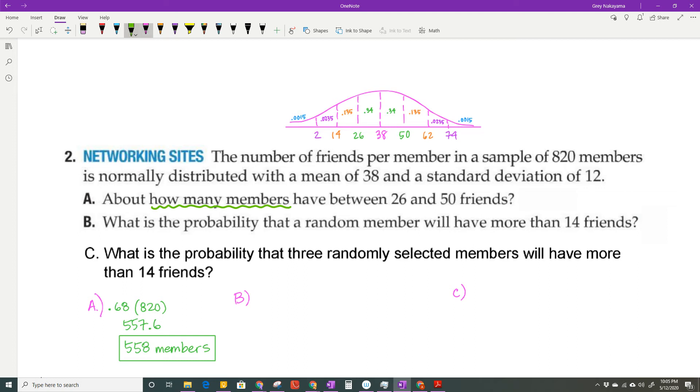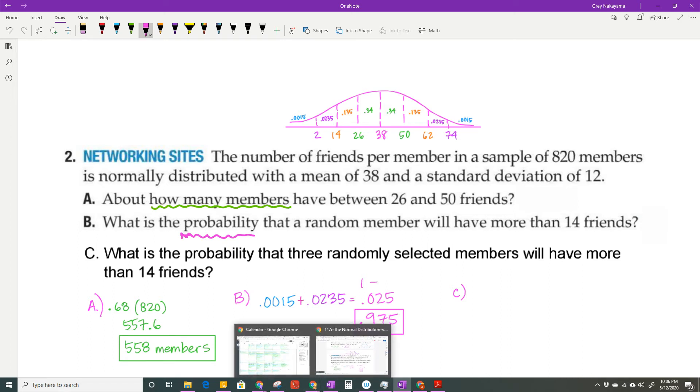This one says, what is the probability? So in this particular problem, it's asking for a probability. So that means my answer should not be more than the number one. What is the probability that a random member will have more than 14 friends? More than 14. 14 is right here. So you've got a couple of choices. You can either go add up all those that are more than 14, or I choose to add up these two because I'm only adding up two numbers. So I'm going to take the 0.0015 and the 0.0235 and find out that that is equal to 0.025. But that's not what is more than 14. That's what is less than 14. And remember, all of these are going to add up to one. So I'm just going to subtract that from one and get an answer of 0.975. So that's my answer.